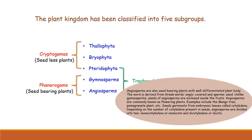The last important group is Angiosperms — one of the most vast and diverse groups. The characteristic feature of angiosperms is that they bear flowers. Their plant body has well-differentiated structures: roots, stem, and leaves. Pteridophytes and gymnosperms also have well-defined vascular tissue and well-differentiated body structures with roots, stem, and leaves. However, what makes angiosperms different is that they bear flowers.